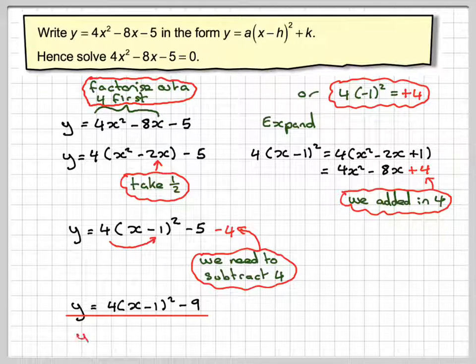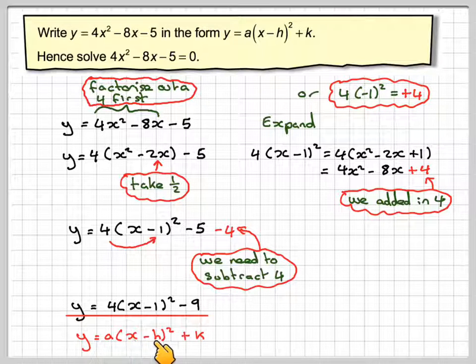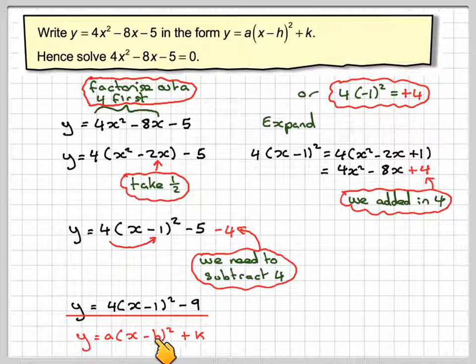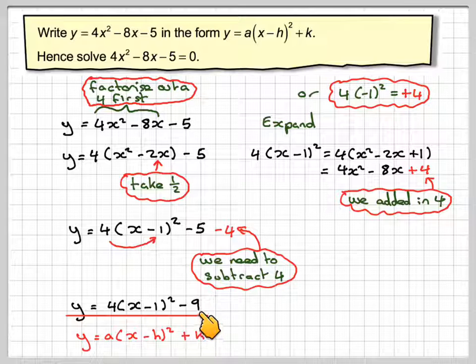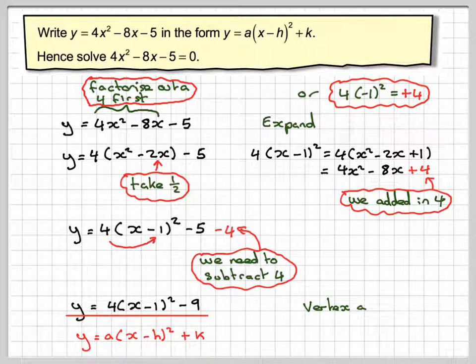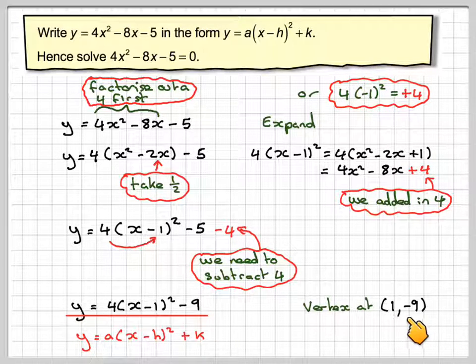So, that's now in the correct format, y equals a(x minus h) squared plus k. So h should be 1 and k will be minus 9, which means that the vertex should be at (1, minus 9). So let's just check that to see.